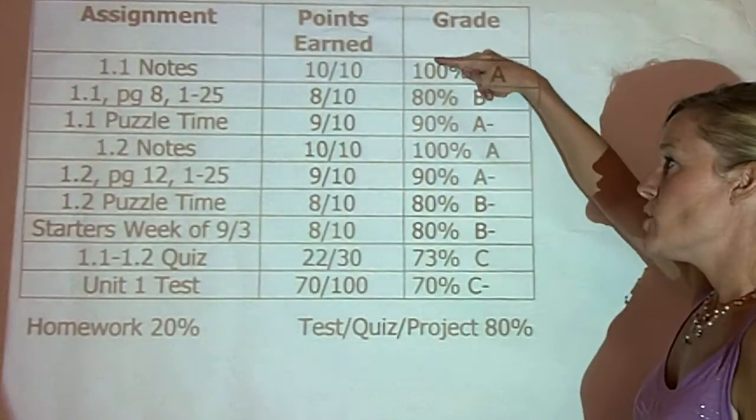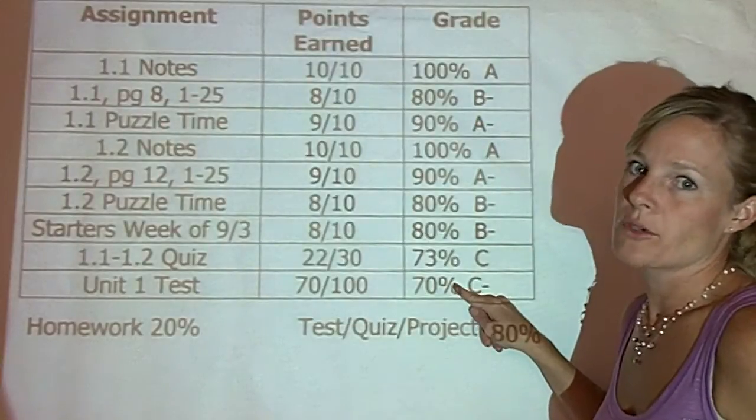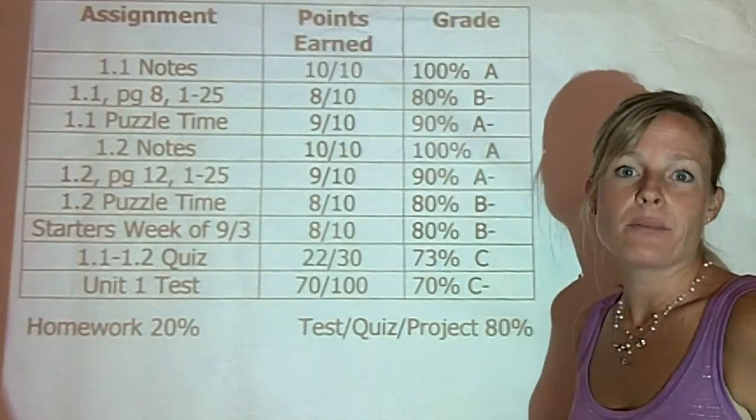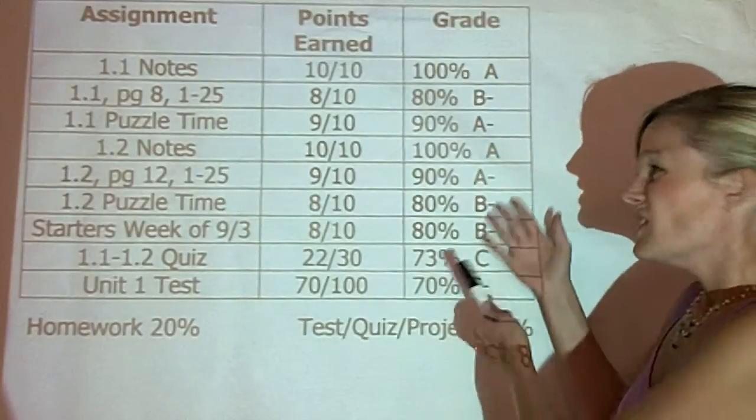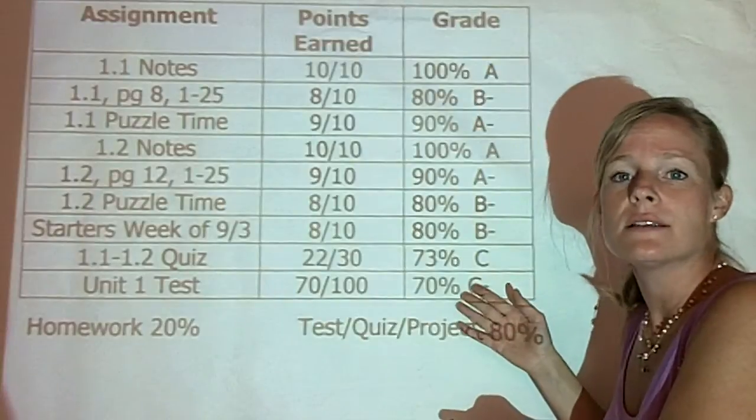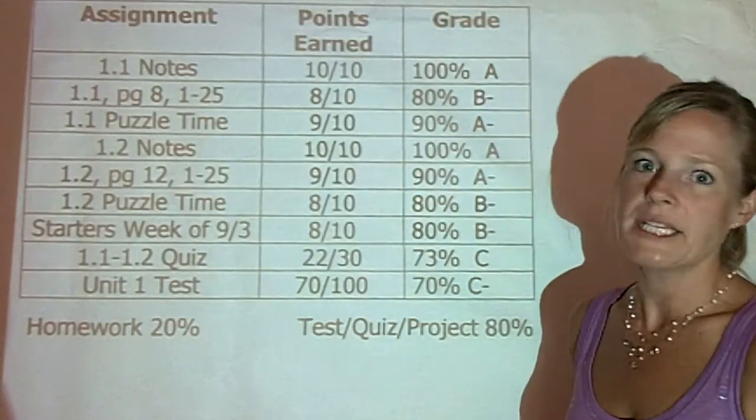Traditionally, you may want to add all of the percentages up and divide by how many numbers you added. When you just do that, you'd end up getting about an 85%, which, looking overall, might make sense. There's a lot of A's and B's and a couple of C's, but in actuality, that's not how you would calculate their grade. So, I'd like to show you how.